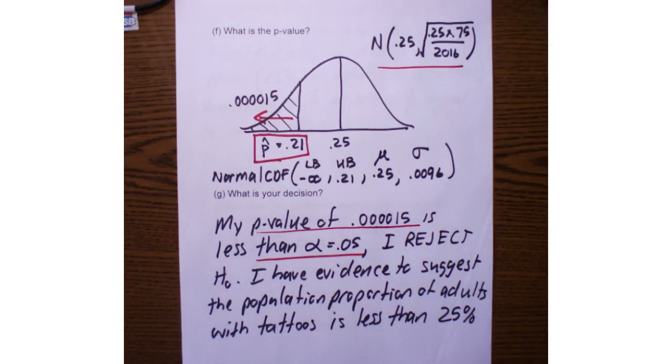I have evidence to suggest that the population proportion of adults with tattoos is less than 25%. Now, does that mean they are less than 25%? No, but I have pretty strong evidence, so that's going to be my conclusion. But maybe I just got one of those weird samples that was unusually small, but I don't know it. So I made some sort of an error, perhaps, and we'll talk more about errors later this week.